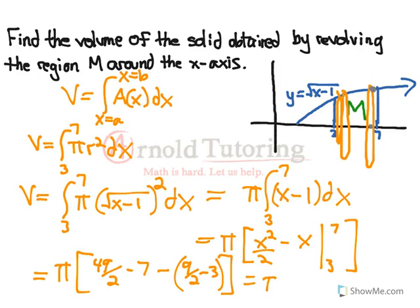Working this out, we get pi times 49 over 2 minus 9 over 2, which is 40 over 2, minus 7 plus 3, which is minus 4. This gives us 20 minus 4, so it's 16 pi units cubed. Don't forget the units, and it's cubed because it's a volume question.